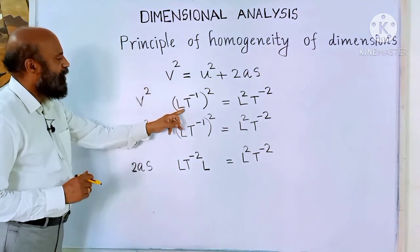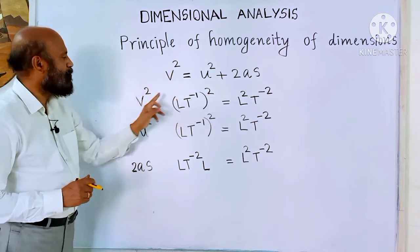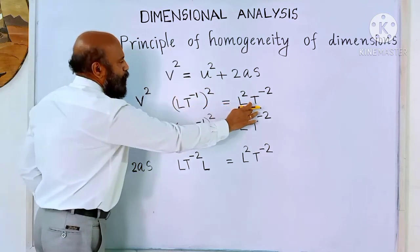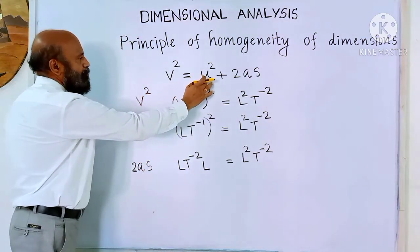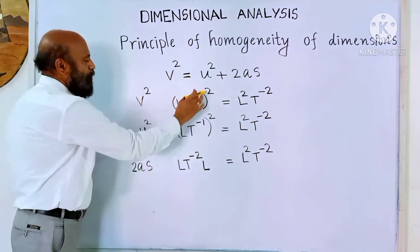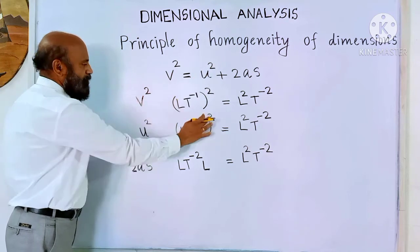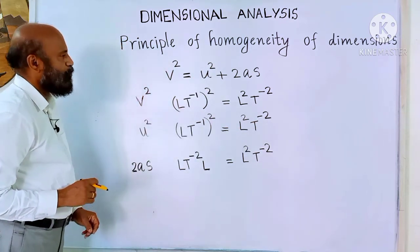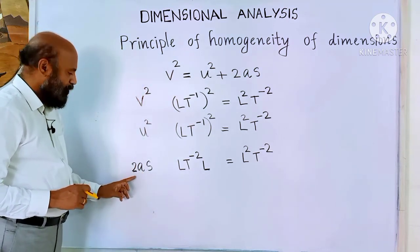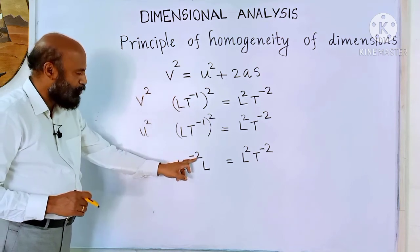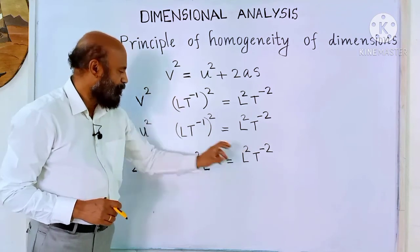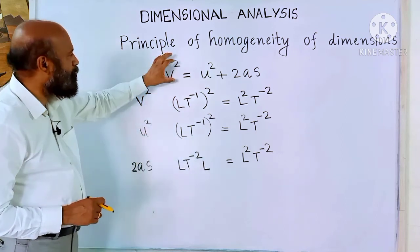Velocity dimension is L T⁻¹. Squaring it gives L² T⁻². So the dimension of the term v² is L² T⁻². Similarly, u is the initial velocity and v is the final velocity, so u² also has dimension L² T⁻². For the term 2as: the constant 2 has no dimension, acceleration has dimension L T⁻², and distance s has dimension L. So the dimension of 2as is L² T⁻². You can see that the dimensions of all the terms are the same.